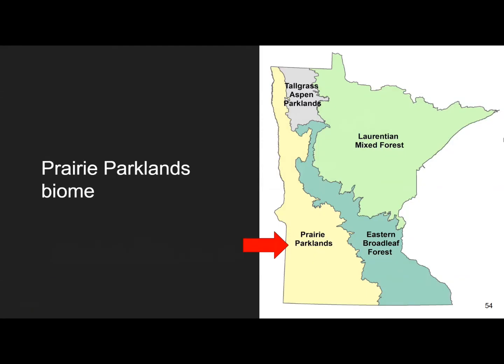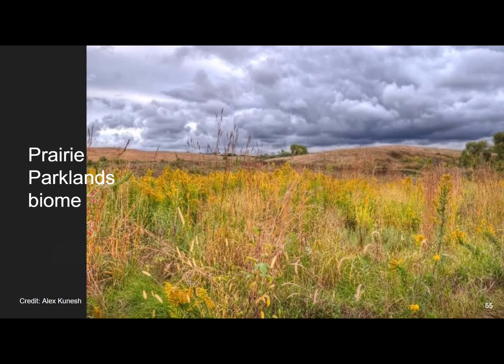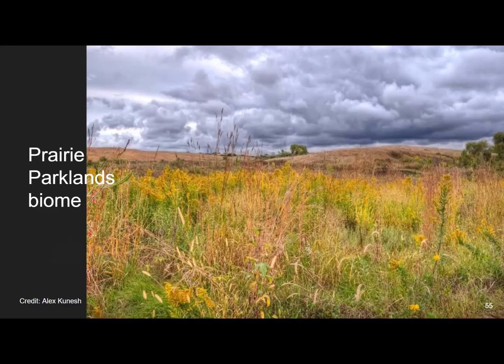The prairie parklands biome is a sea of grass. It covers all of the western portion of the state as well as the southwest corner. Some of the most fertile agricultural land in the United States is found in this area. The prairie parklands features large open spaces with rolling hills, mostly fine fuels, very few heavy fuels, and where there are heavy fuels, they are clustered in pockets on the landscape. Because this is such fertile ground for agriculture, most of the prairie parklands actually have more farms than prairie — less than 1% of the natural vegetation remains.